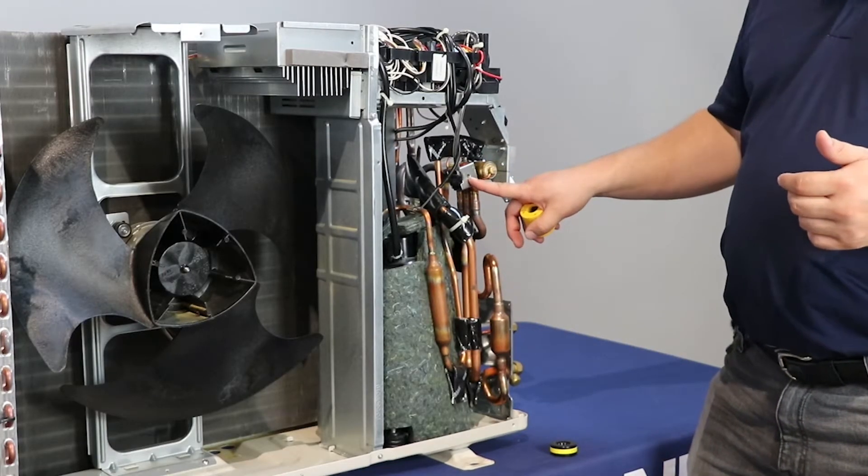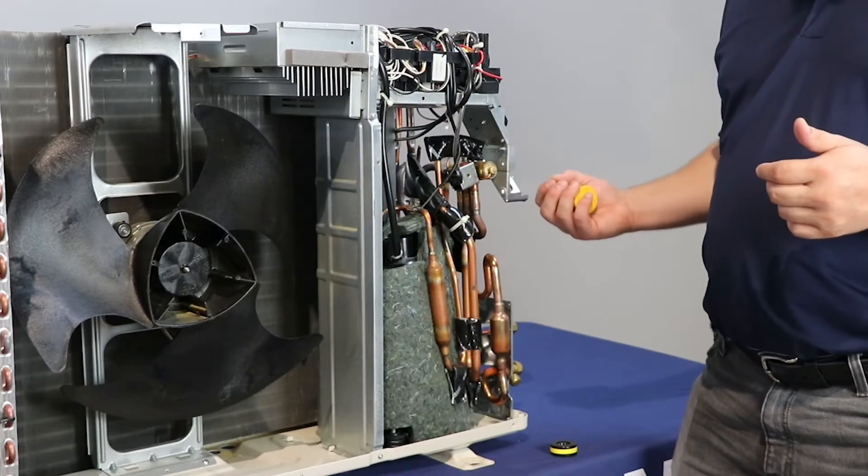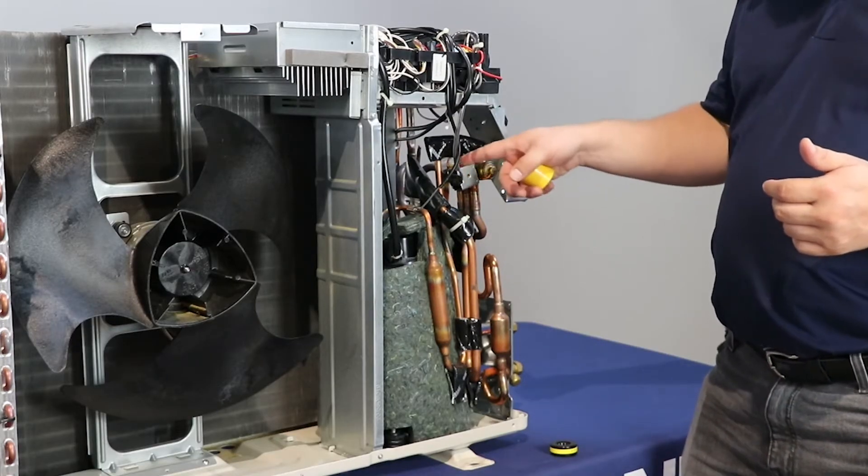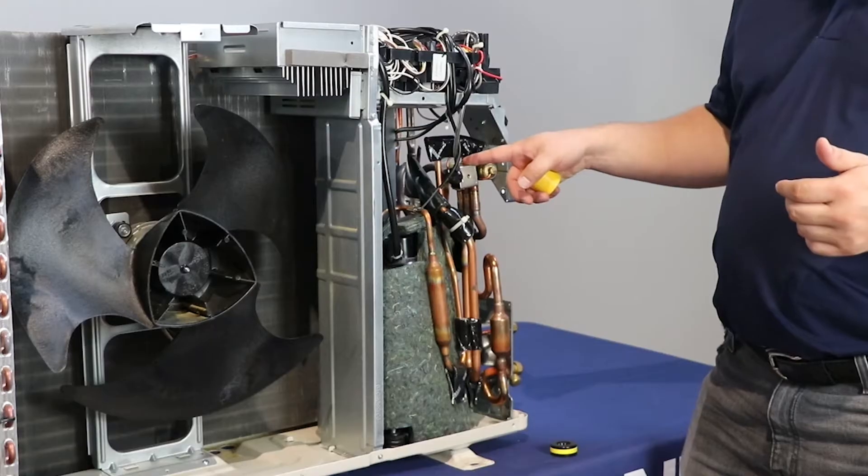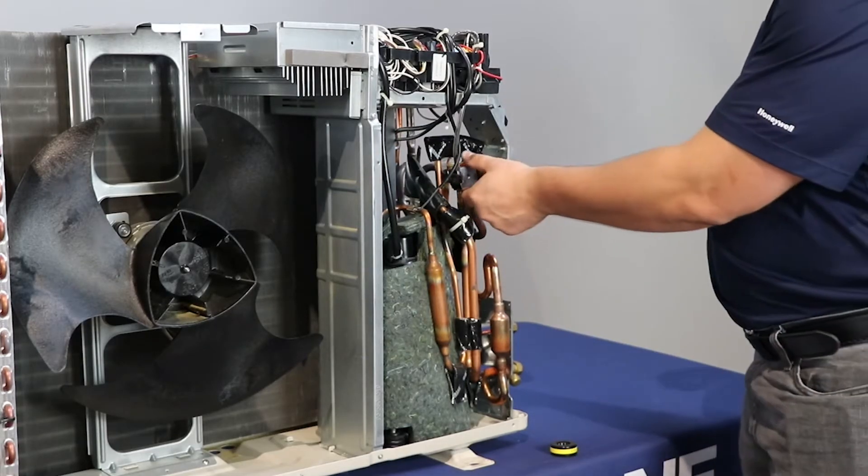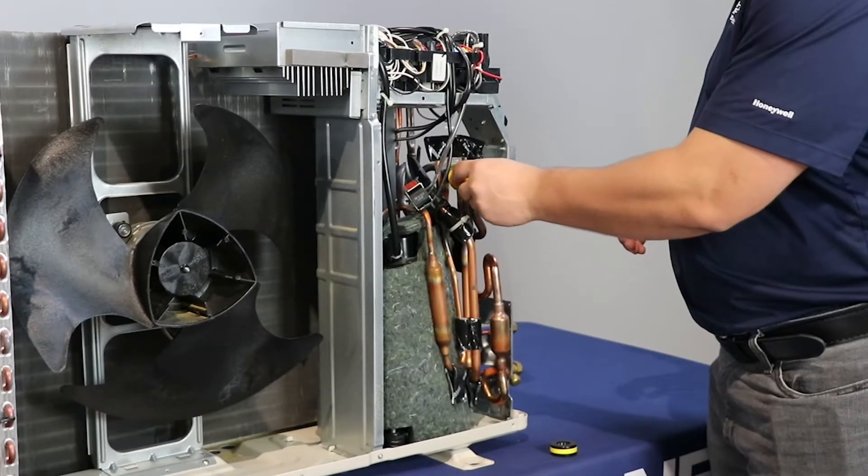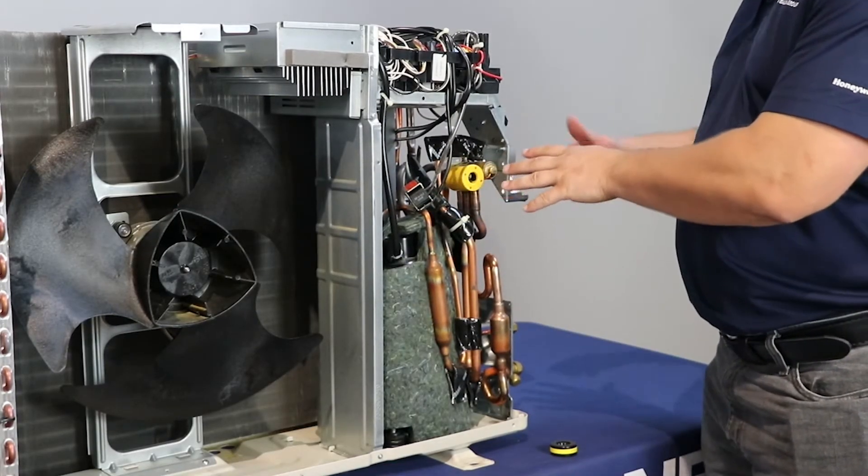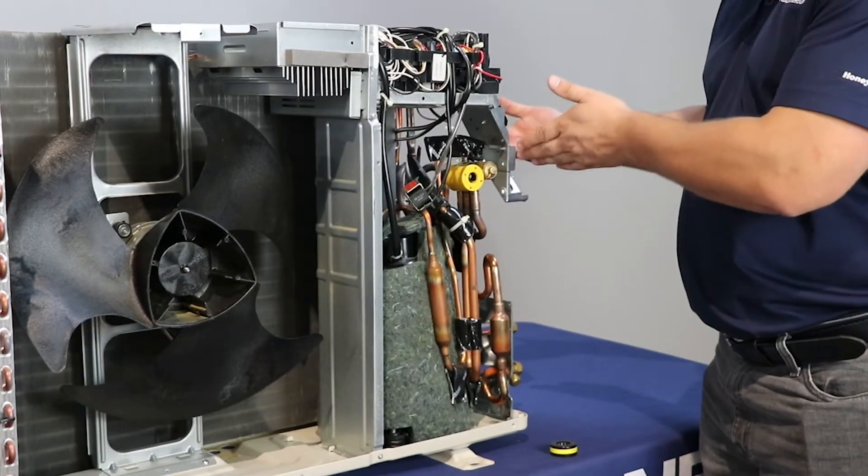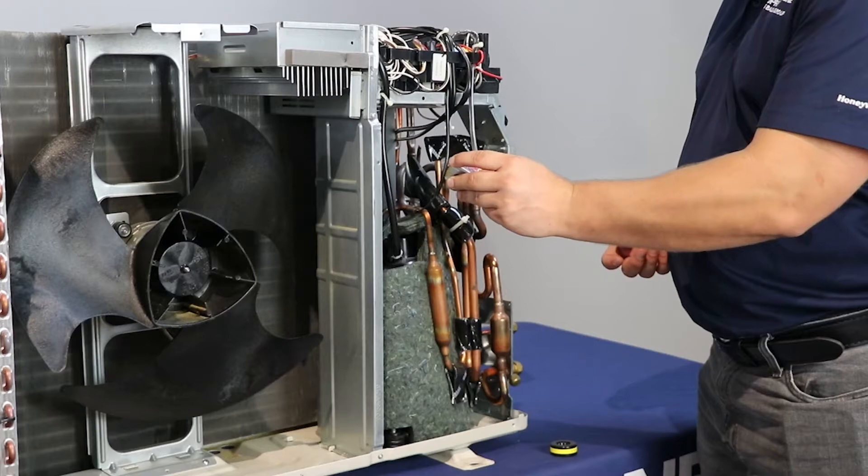Now this solenoid operates by getting electricity to it and it uses magnetism to pull a plunger inside. So if this portion of it is not working, the only way for us to test it is to use a solenoid magnet. So you pop it off and you put the solenoid magnet on and if you hear that clicking then everything within the reversing valve is good and potentially this solenoid coil is bad.